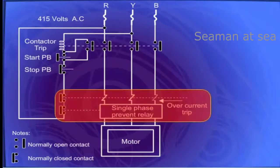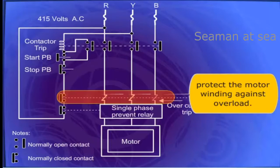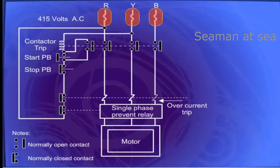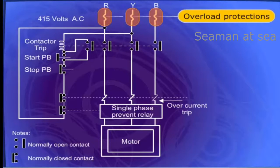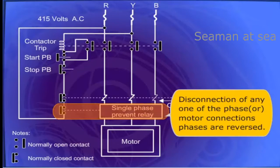The thermal overload relay protects the motor winding against overload. Fuses are also provided for overload protection. The single phase preventer will trip when there is disconnection of any one of the phases to the motor.